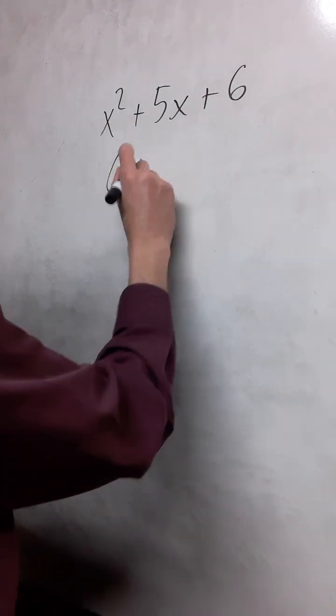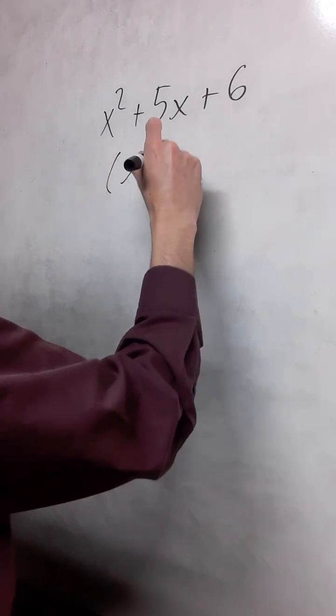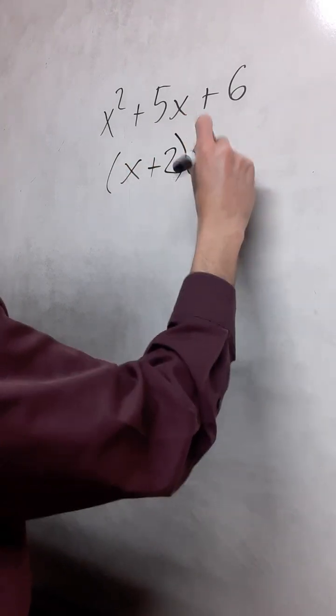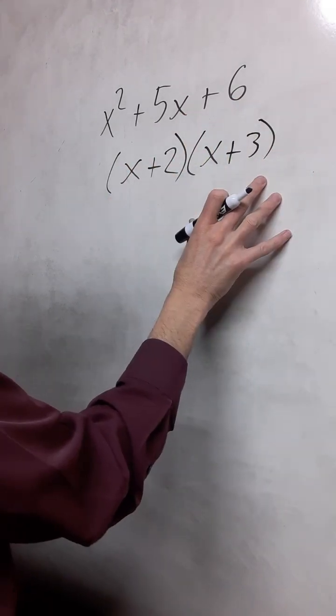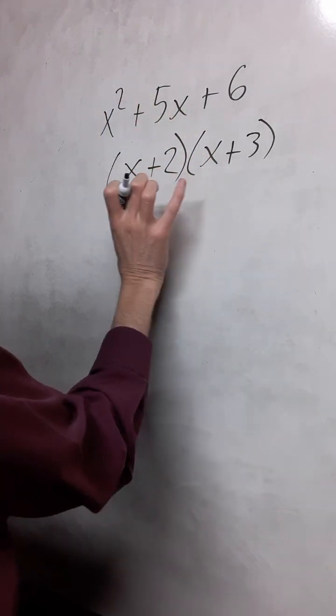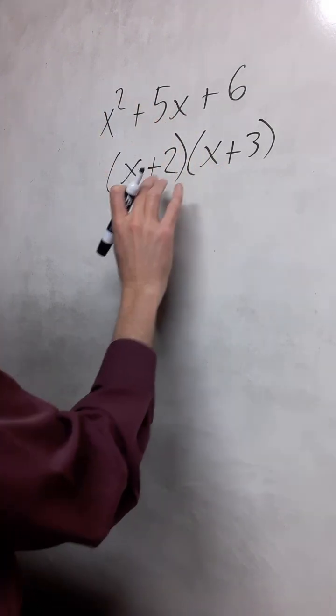Find factors of this. The factors are going to be x plus 2 and then x plus 3. And we can check this and you'll see that you have 2x and 3x that add to 5.